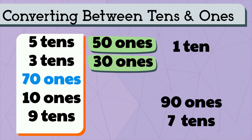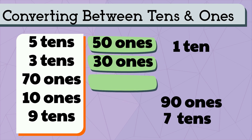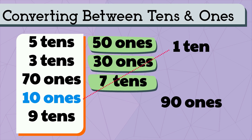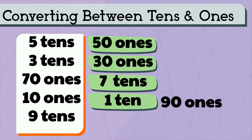Seven tens is equal to seventy ones. Ten ones is equal to one ten, and nine tens is equal to ninety ones.